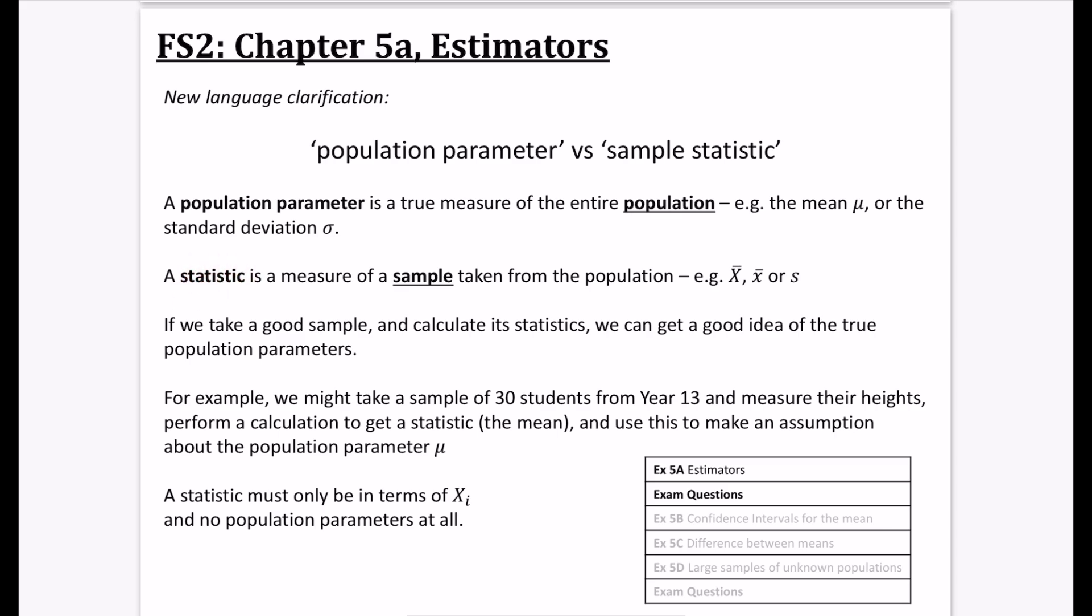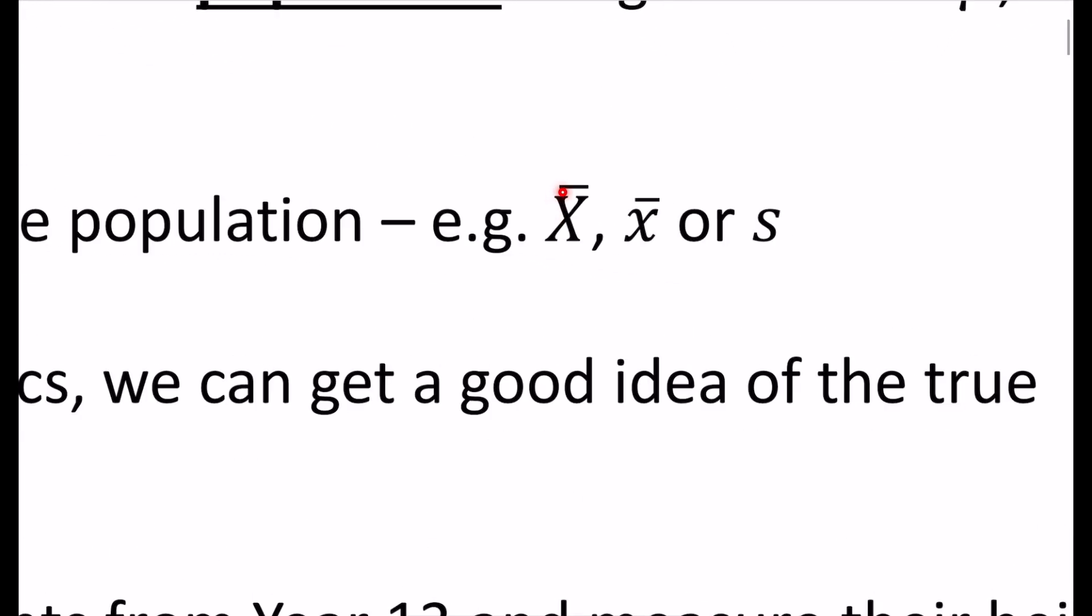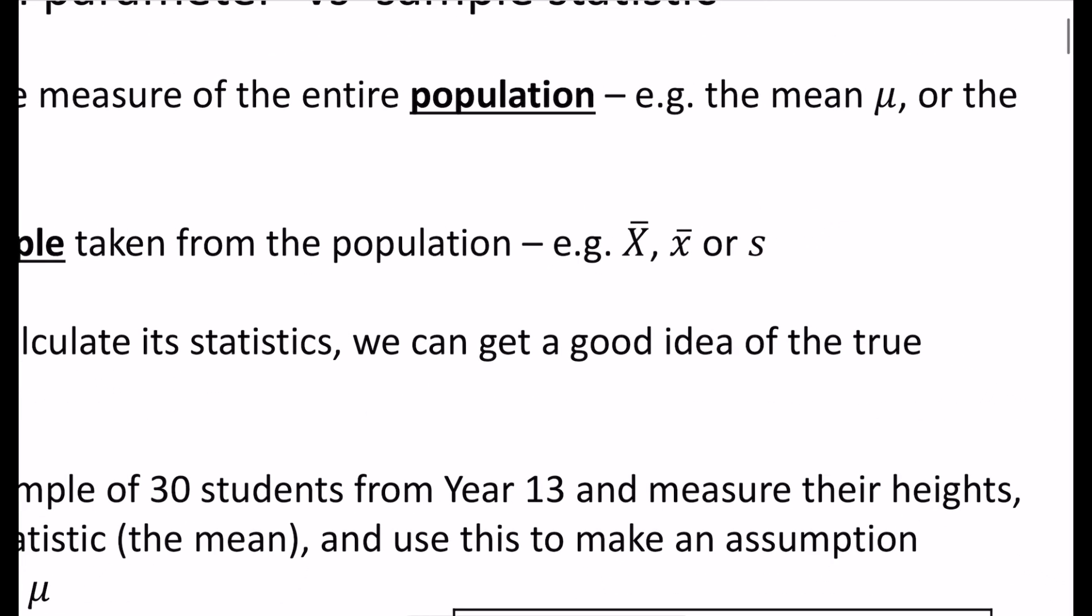A statistic is a measure of a sample taken from a population - that could be X̄ or this variable S. When we have a capital letter, it refers to something that hasn't been picked yet, like the general mean of the sample. Lowercase letters are a particular version. Capital X̄ is the mean of the sample in general, lowercase x̄ is a specific mean. S is a different version of standard deviation, different from σ.